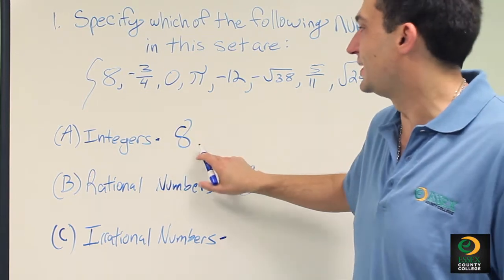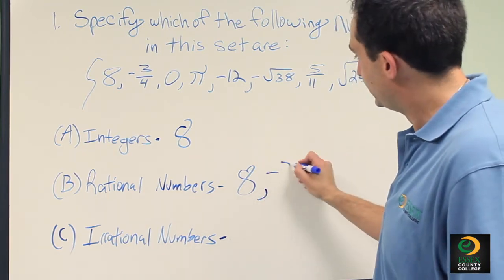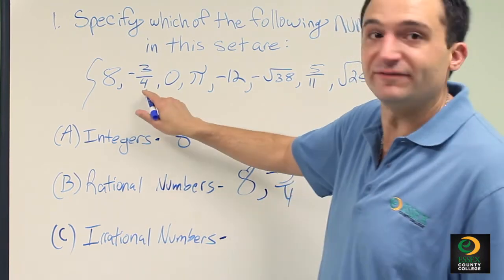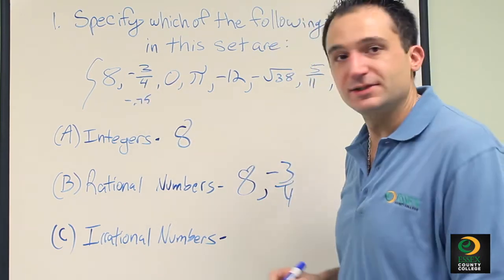Negative 3 quarters is not an integer because it's a fraction. However, it is a rational number, because if you were to divide it, you would get negative 0.75, and it ends. It doesn't go on infinitely.